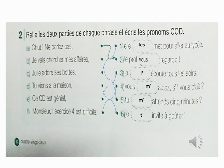On va compléter avec 1. Elle l'aimait pour aller au lycée. Le pronom C.O.D. utilisé ici : les. La phrase D : Tu viens à la maison ? Je vais compléter avec 6 : Je t'invite à goûter. La phrase E : C'est C.O.D. et génial. On va compléter avec 3.